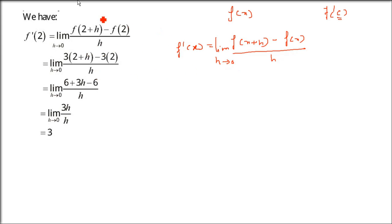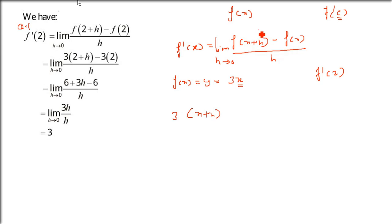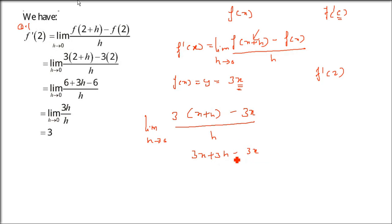The function given in question 1 is f(x) = 3x. We have to find f'(2). So wherever we find x, put x+h. So f(x+h) = 3(x+h), and f(x) = 3x. Then divided by h with limit h tends to 0. This gives 3x + 3h minus 3x — the 3x cancels, only 3h remains. The h in numerator and denominator cancel, so the answer is 3.